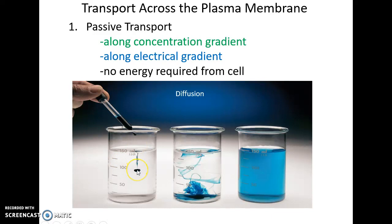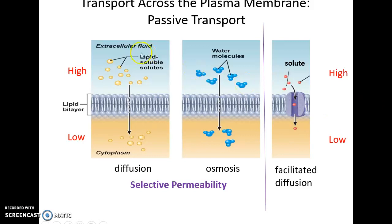Here's diffusion: lots of dye in a droplet at high concentration and none in the water at low concentration, so the dye spreads out from high to low. We can get diffusion across the cell membrane for solutes. When diffusion involves water, it is referred to as osmosis — the movement of water from high to low water concentration.